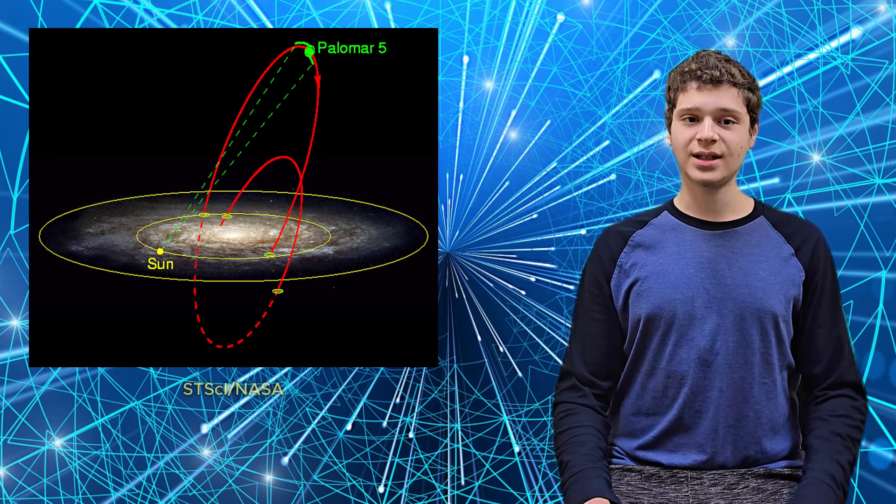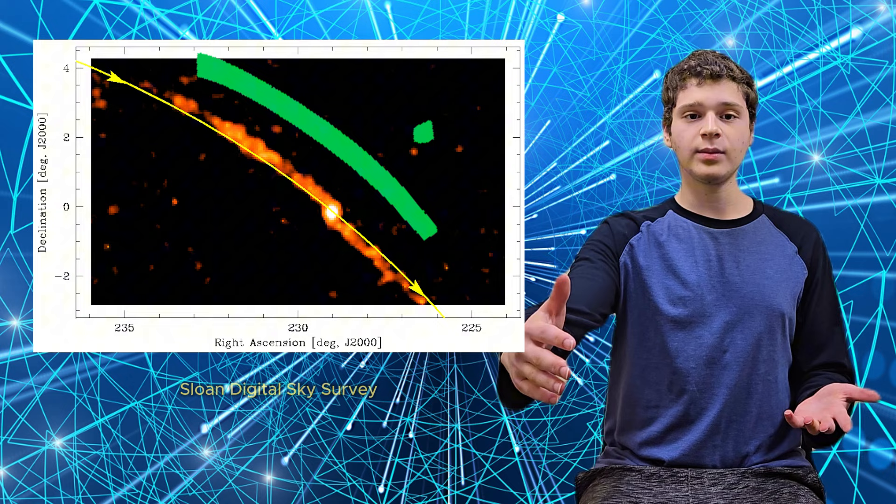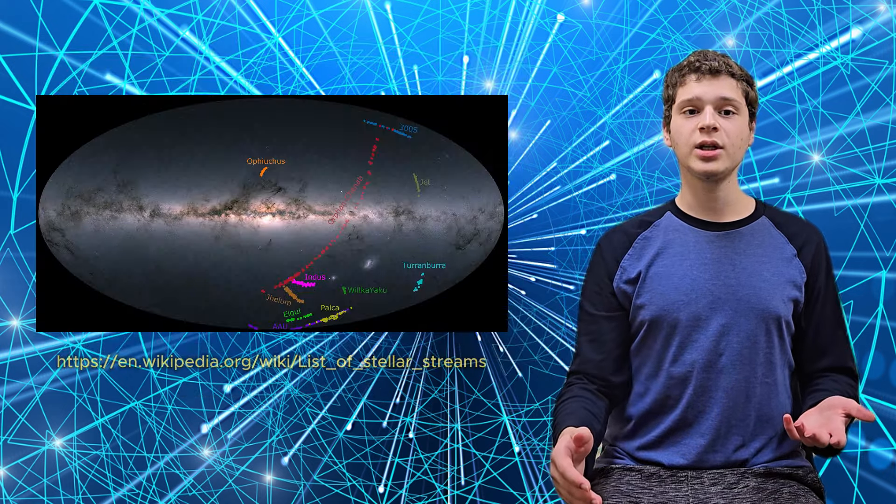Astrophysicist Marc Gilles from the University of Barcelona explained in 2021 that we still don't know how these streams form. One theory suggests that they come from disrupted star clusters, but none of the recently discovered streams are linked to a cluster. This is where Palomar 5 stands out. It has both a loose spread of stars and a long tidal stream, making it a key case for studying stream formation.